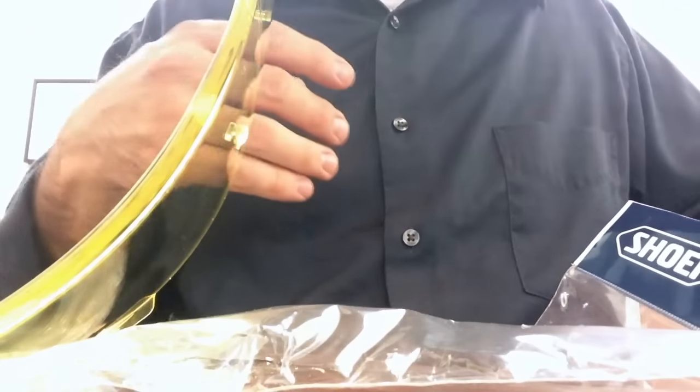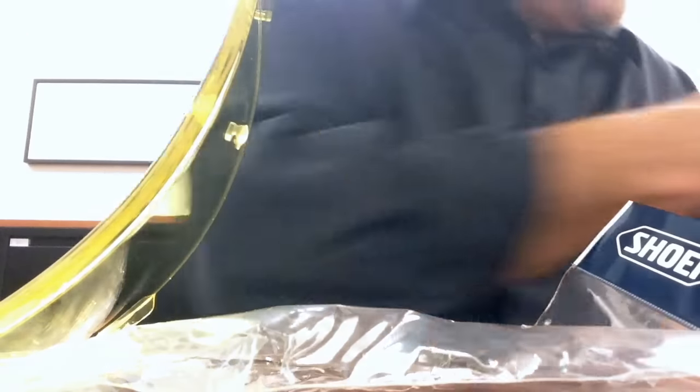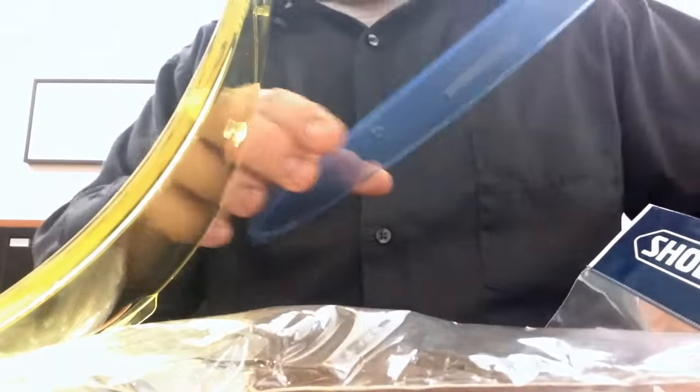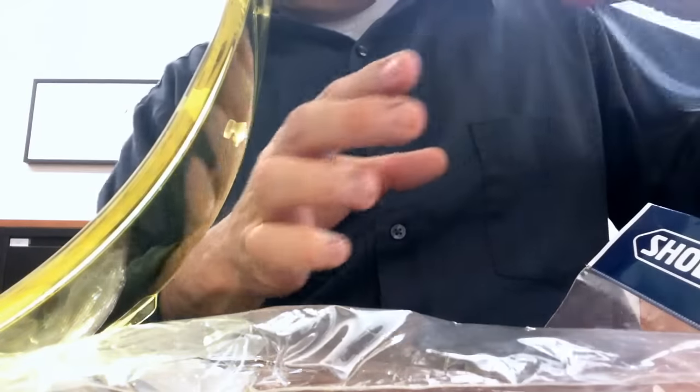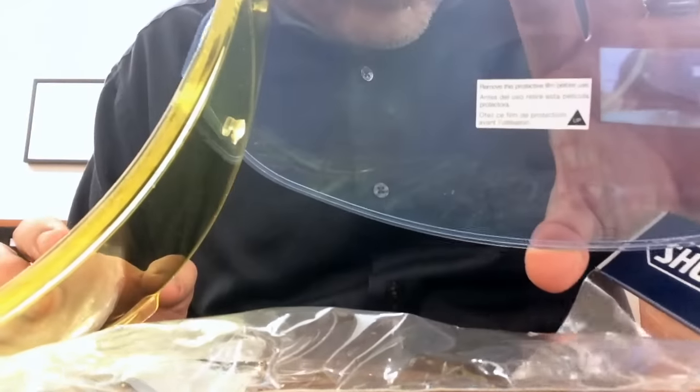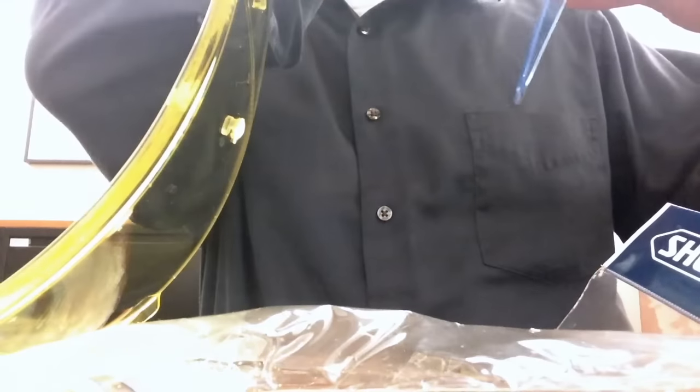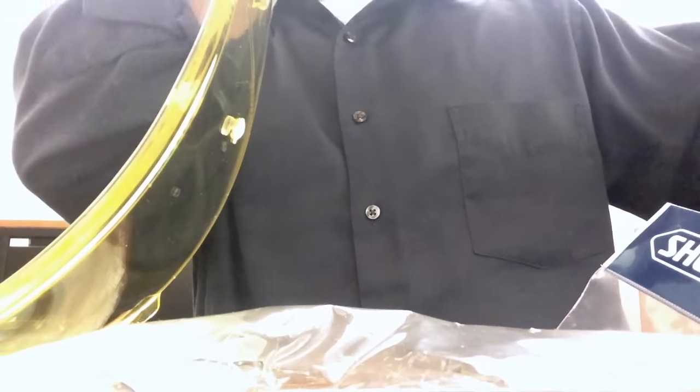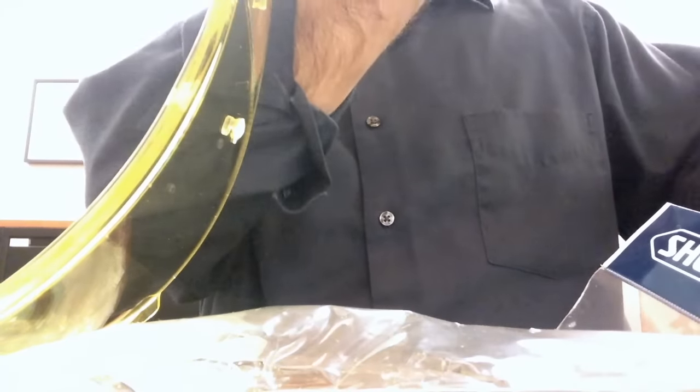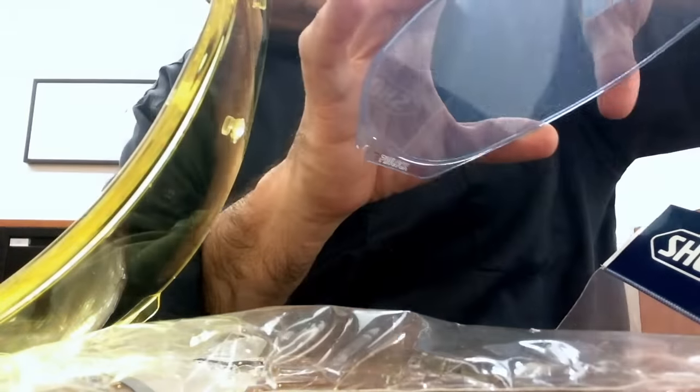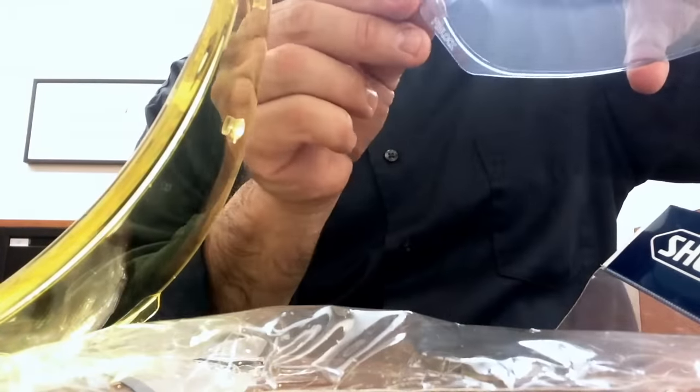What you do is you take the Pinlock insert, like this, and there's a sticker on there that says up and then it says to remove part of the protective film just a little bit on each side. It's not supposed to touch the other side at all.